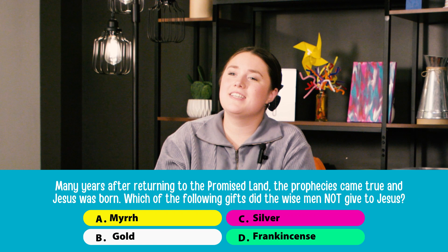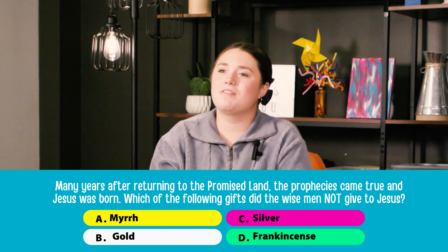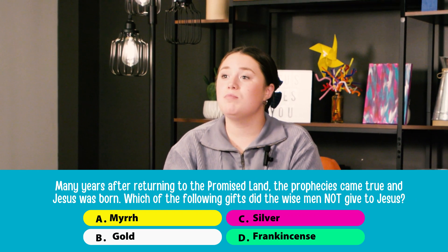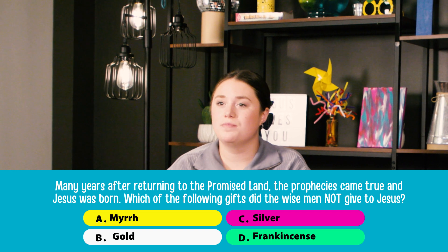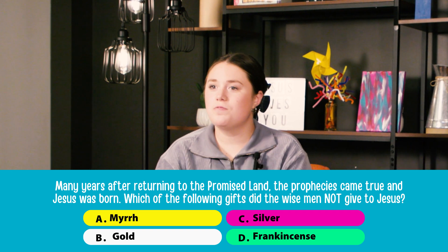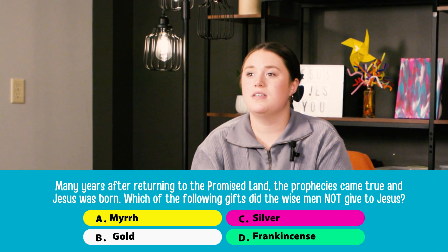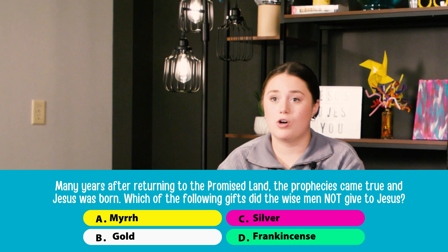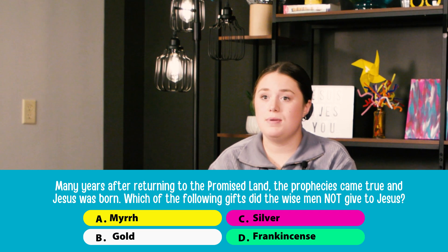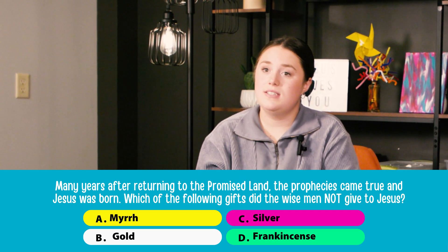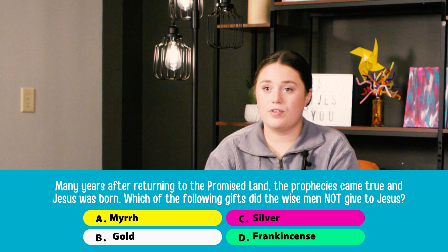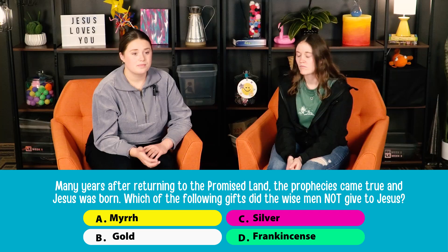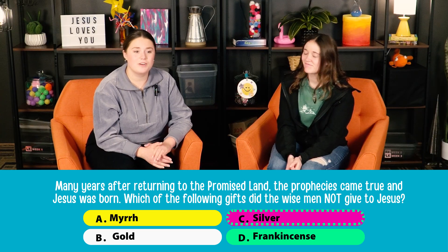Many years after returning to the promised land, the prophecies came true and Jesus was born. Which of the following gifts did the wise men not give to Jesus? A: myrrh. B: gold. C: silver. D: frankincense. The correct answer is C — silver.